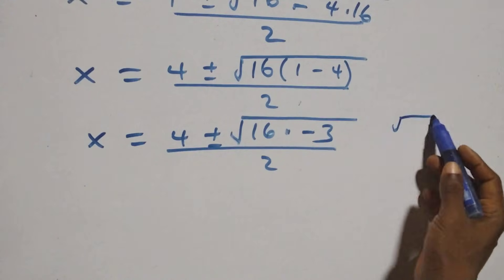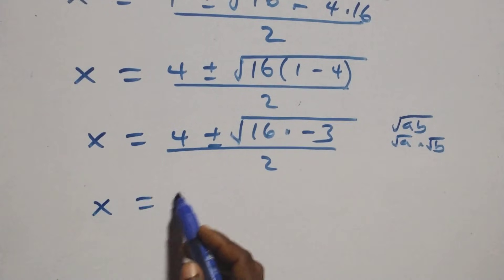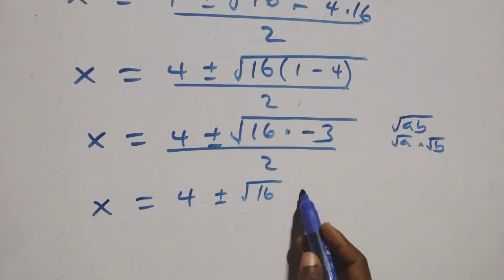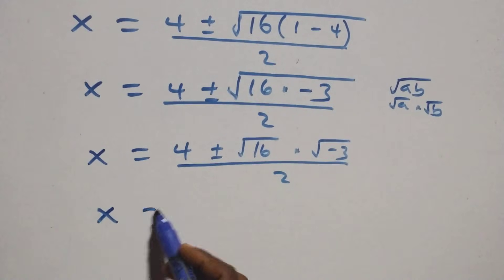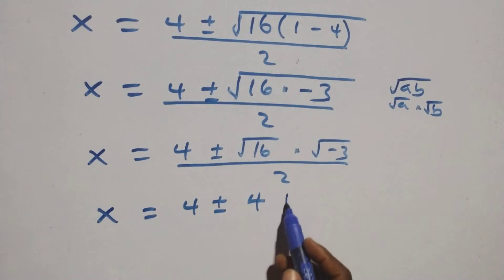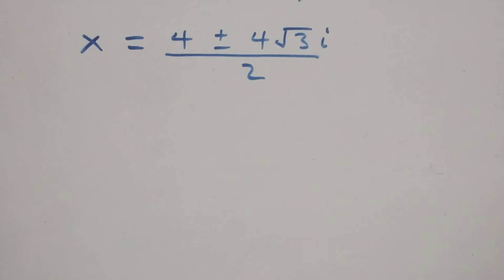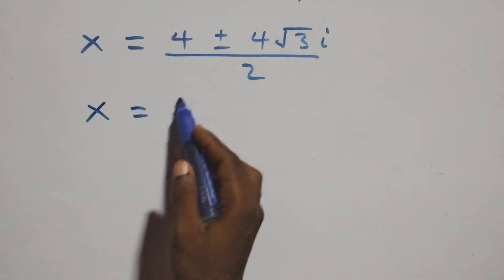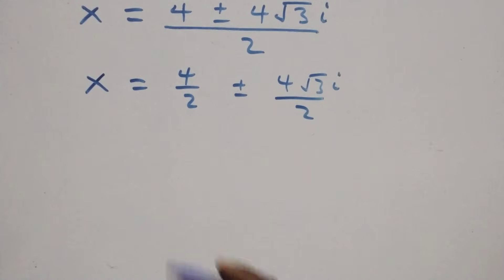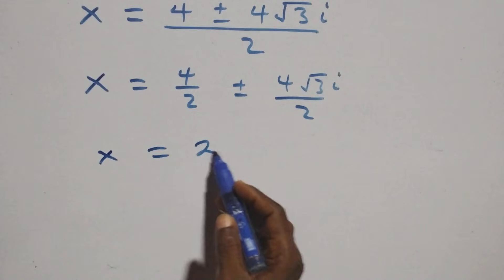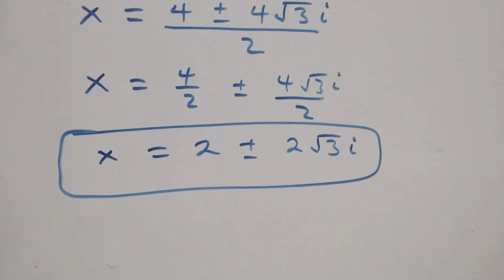Since root(a·b) = root(a)·root(b), we have x equals to 4 plus or minus root 16 times root of minus 3, all over 2. Root 16 is 4 and root of minus 3 becomes root 3 times i. Separating into two fractions: x equals 4/2 plus or minus 4√3i/2, which gives x equals 2 plus or minus 2√3i. These are two complex solutions.